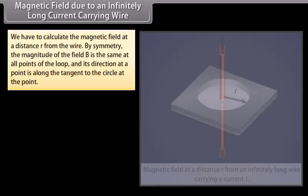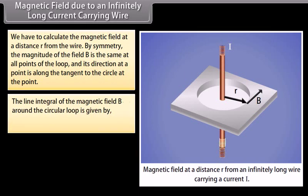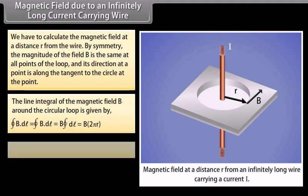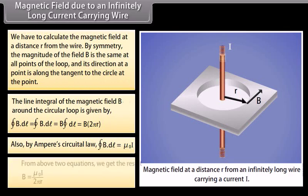To calculate the magnetic field due to an infinitely long current carrying wire at a distance R from the wire: by symmetry, the magnitude of field B is the same at all points of the loop, and its direction at any point is along the tangent to the circle. The line integral of B around the circular loop is B times 2 pi R. By Ampere's Circuital Law, closed integral of B dot dL equals mu_0 I. From these two equations, we get B is equal to mu_0 I divided by 2 pi R.